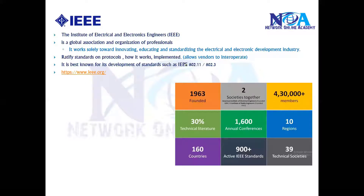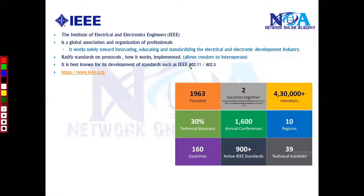IEEE is best known for 802.11 and 802.3 standards, which are typically used in our networks. 802.11 is used for wireless LAN implementations and 802.3 is for Ethernet implementations.